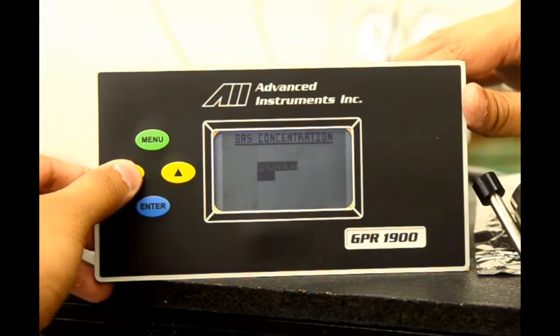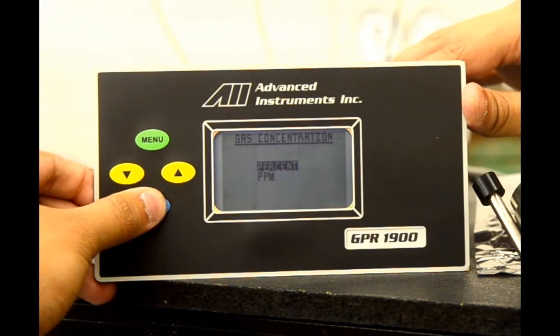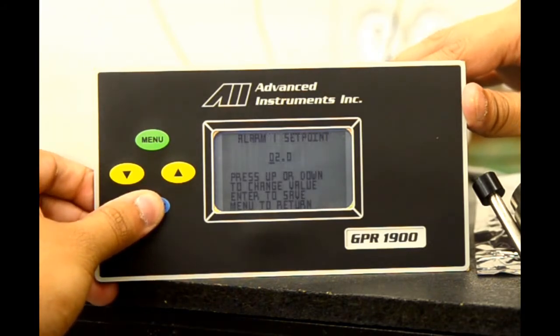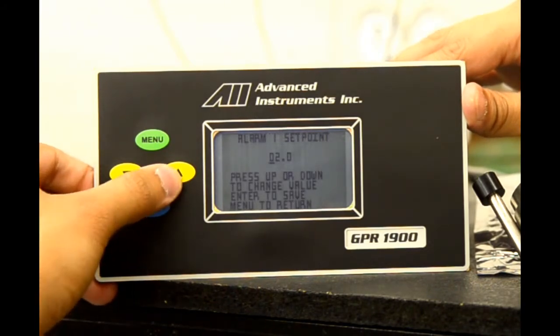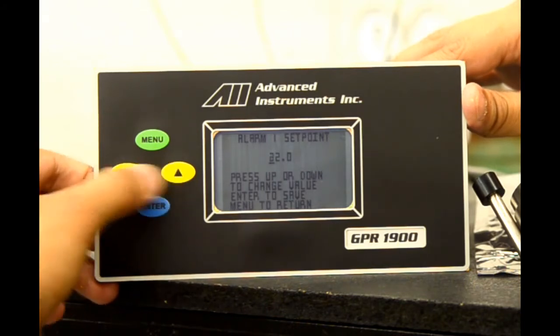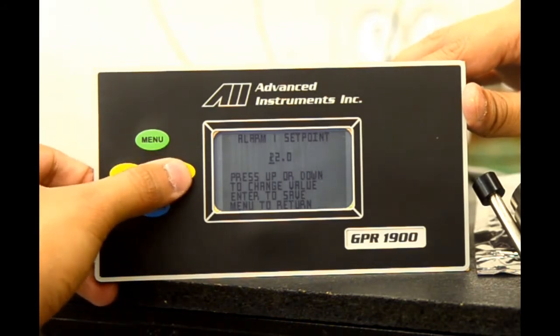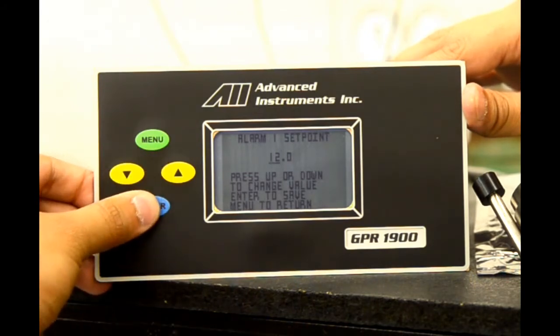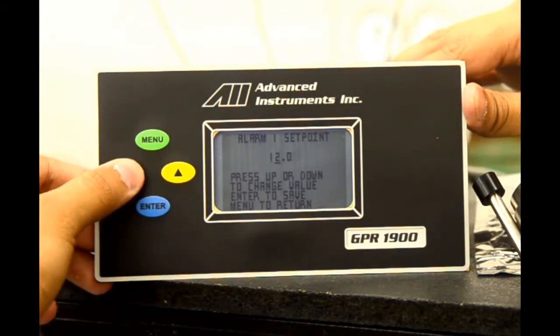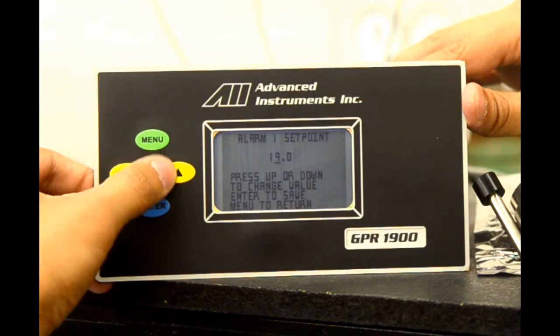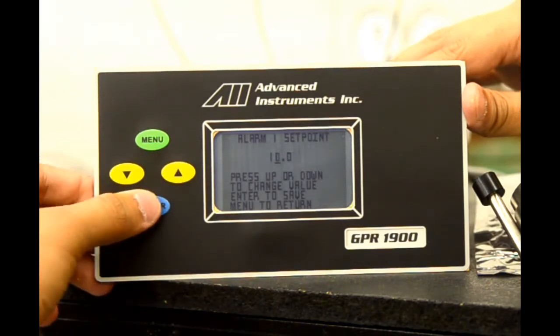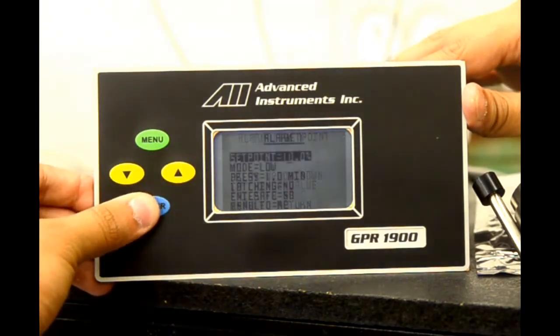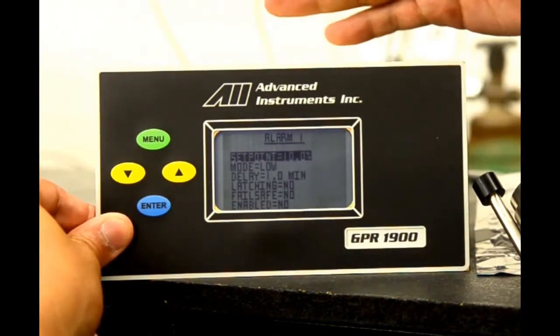We will now set the set point. Select enter and you're brought to percent or PPM as an option. We will do percent. We select enter on percent and are taken to the alarm one set point menu. Here we can scroll up or down to change the value that the cursor is under. We will select 10%. We select one, then hit enter to move over. Again, up or down to change the value. The alarm is now set at 10%.